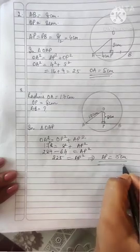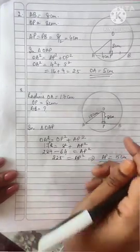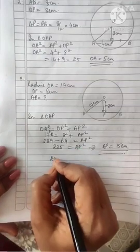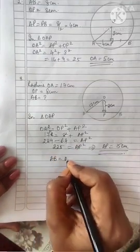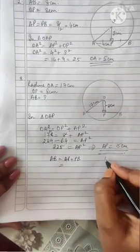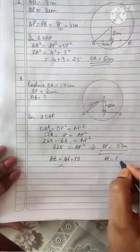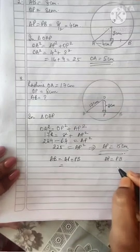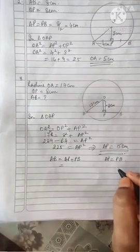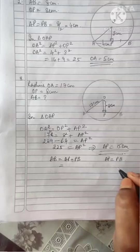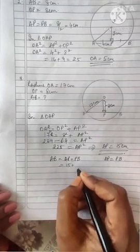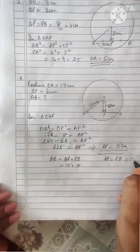To find the length of the chord AB, note that AB equals AP plus PB, and since AP equals PB (perpendicular from center bisects the chord), AB equals 15 plus 15, which is 30 cm.